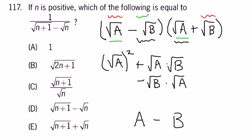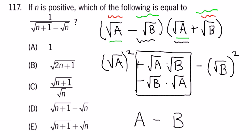We have minus the square root of B times the square root of B, which is going to give us minus the square root of B squared. These two terms cancel each other out. We are left with the square root of A squared minus the square root of B squared.